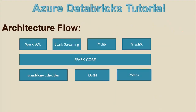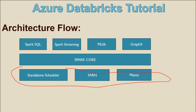Let's look at the architecture flow of Azure Databricks. At the bottom you can see three cluster managers: YARN, Mesos, and Standalone Scheduler. Everything is managed on the cluster at the bottom. In the middle is the Spark Core. Spark Core contains basic functionality like task scheduling, memory management, fault tolerance, and interacting with storage systems. Above that is Spark SQL, which is the package for working with structured data.